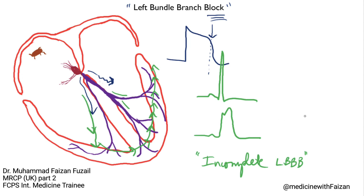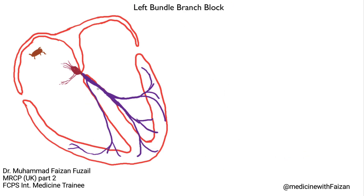Let's now talk specifically about how we diagnose a complete left bundle branch block. We should recall that the septum of the heart depolarizes primarily from left to right, because it's the branches of the left bundle that depolarize the septum in that direction. So when the left bundle branch does not depolarize properly, you wind up losing evidence of early septal depolarization.